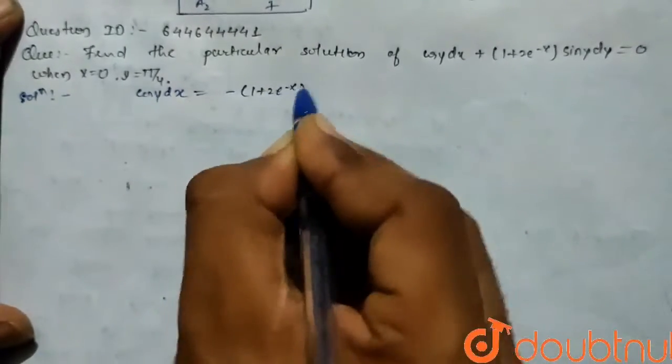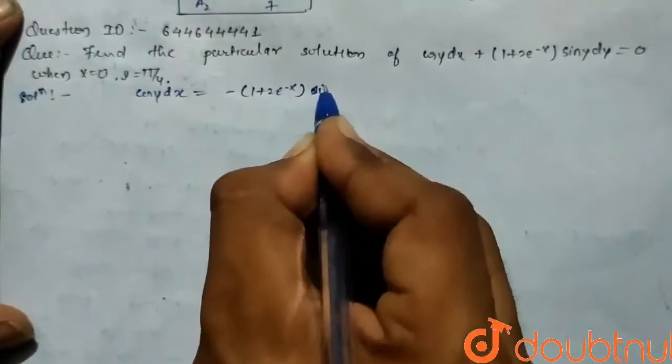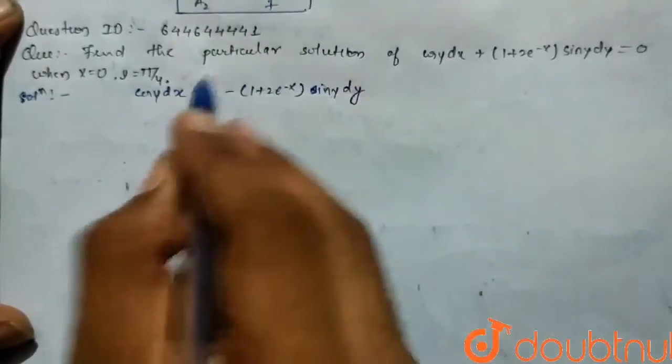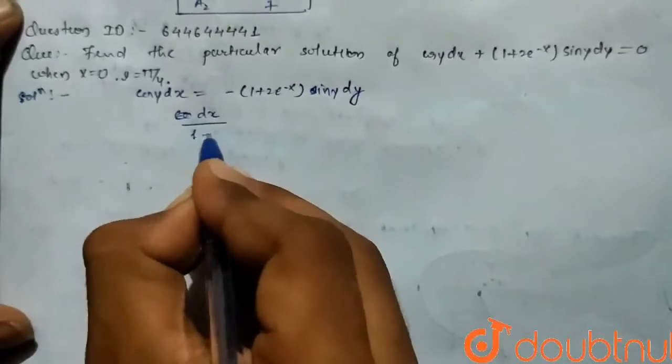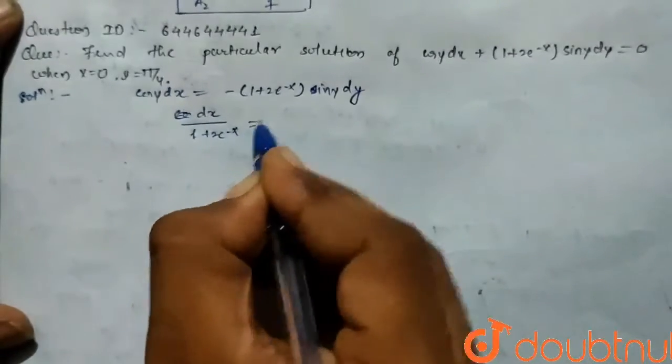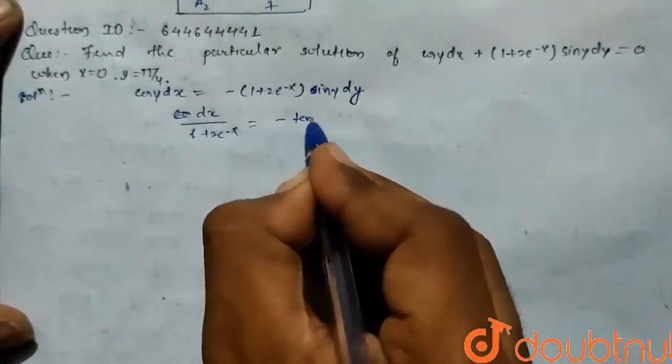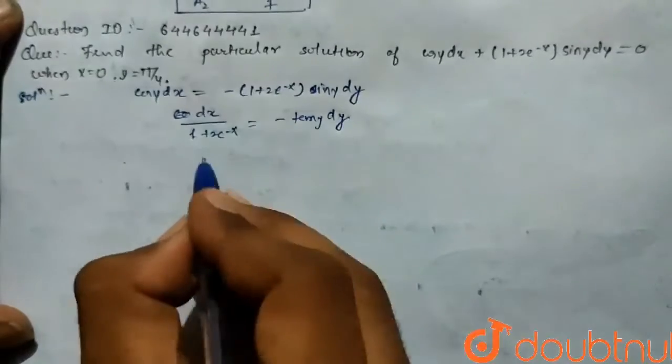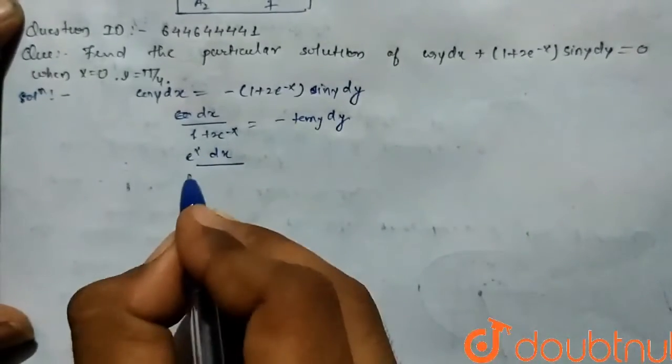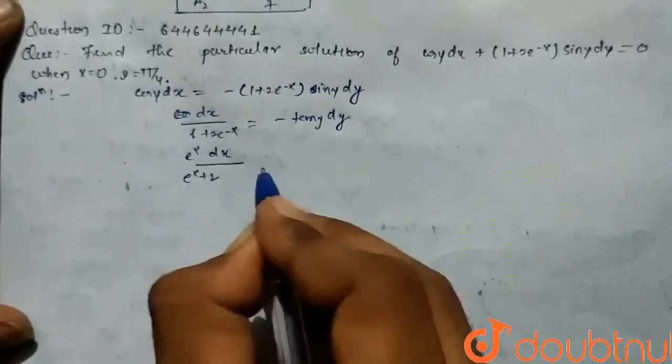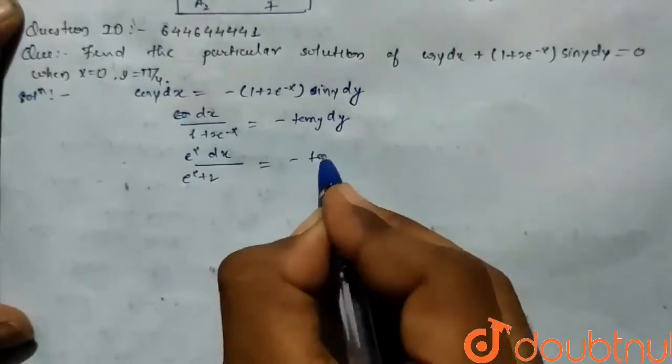So in solution part here, cos y dx is equal to minus 1 plus 2 e to the power minus x sin y dy. So here dx upon 1 plus 2 e to the power minus x equals to minus tan y dy. We can write, taking e to the power minus x as a common, it becomes e to the power x by 2 minus tan y dy.